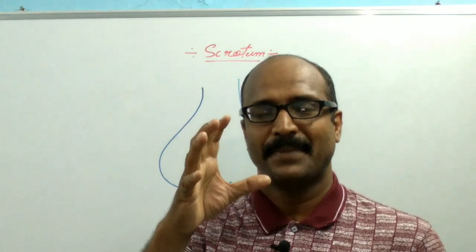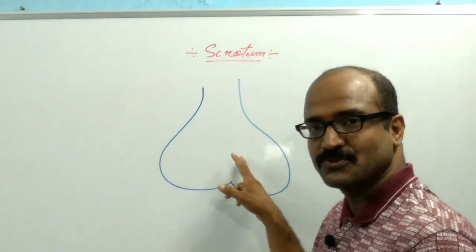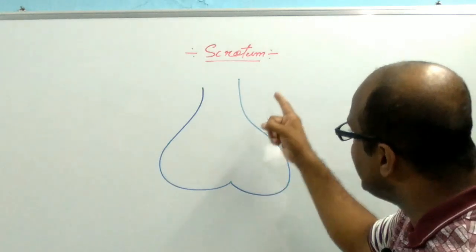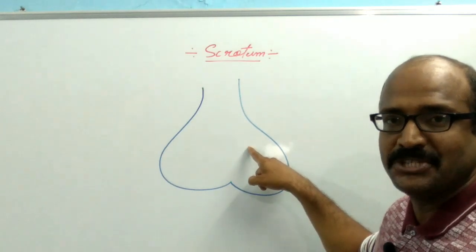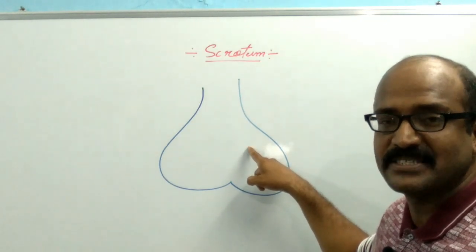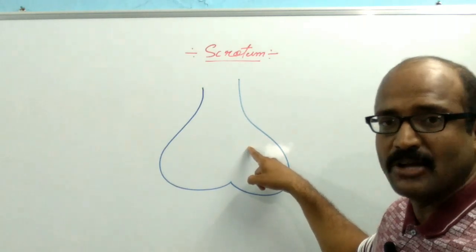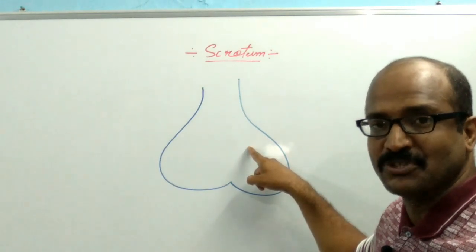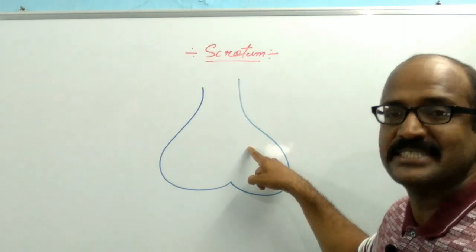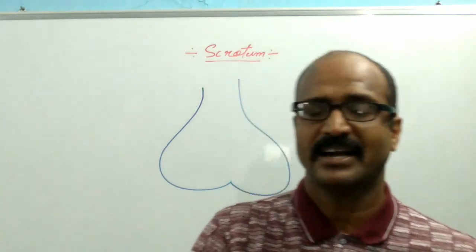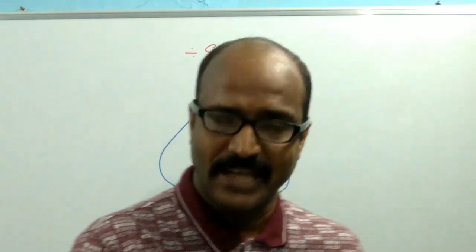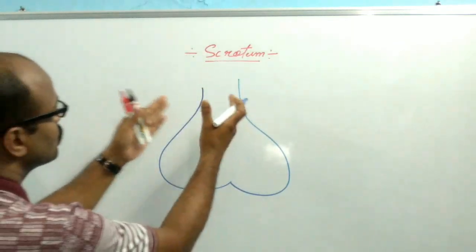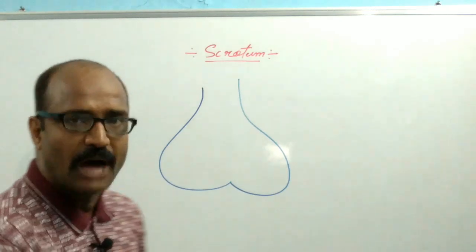As you know, a pair of testes are present inside the scrotum, inside the intrascrotal sac. The spermatogenesis process, or the formation of sperm, takes place inside the testes. This spermatogenesis process needs a temperature two degrees less than the core body temperature, that is 36.6 degrees Celsius. That is why the testes or the scrotum are present outside of the abdominal cavity.